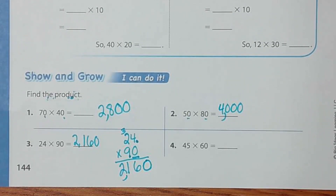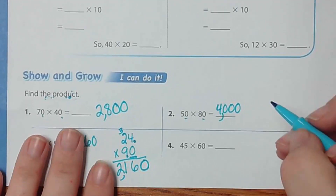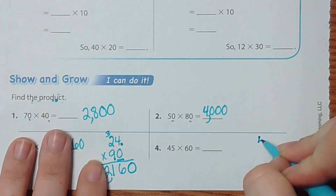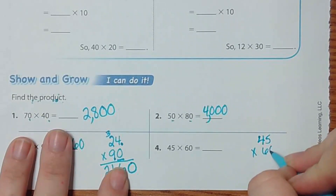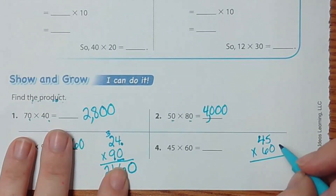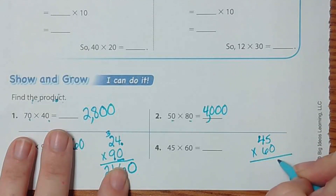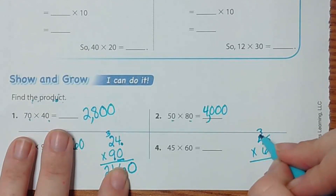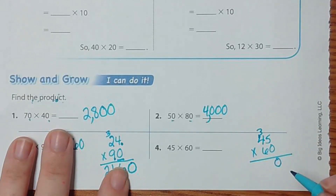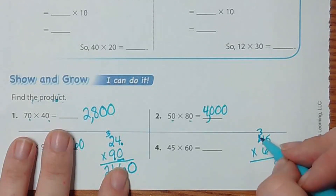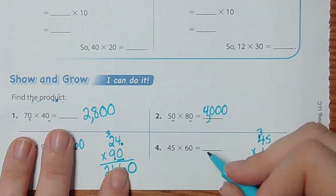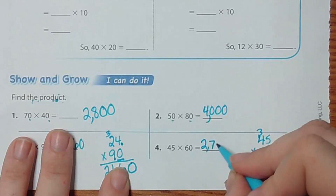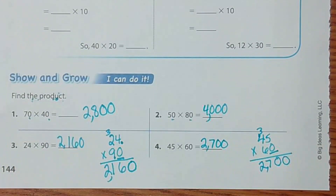The next problem is 45 times 60. Six times 5 is 30. Six times 4 is 24, plus 3 is 27. We have one zero so we bring it down as a placeholder — 2700, or two thousand seven hundred.